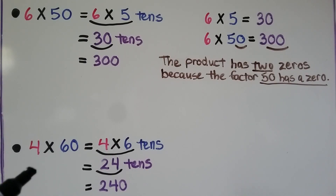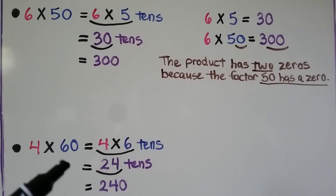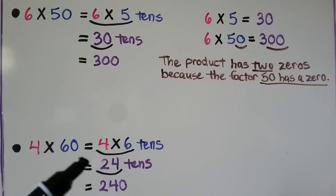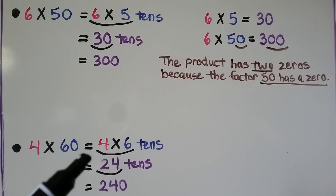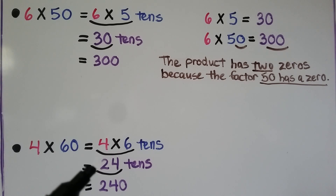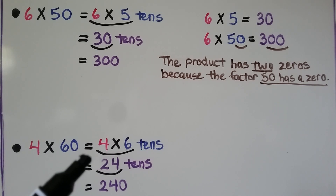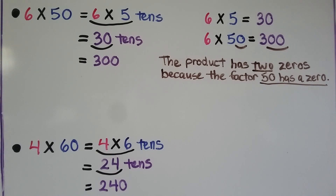Here we have 4 times 60, which is equal to 4 times 6 tens. We do the basic fact of 4 times 6, which is equal to 24. That means we have 24 tens, which is equal to 240.